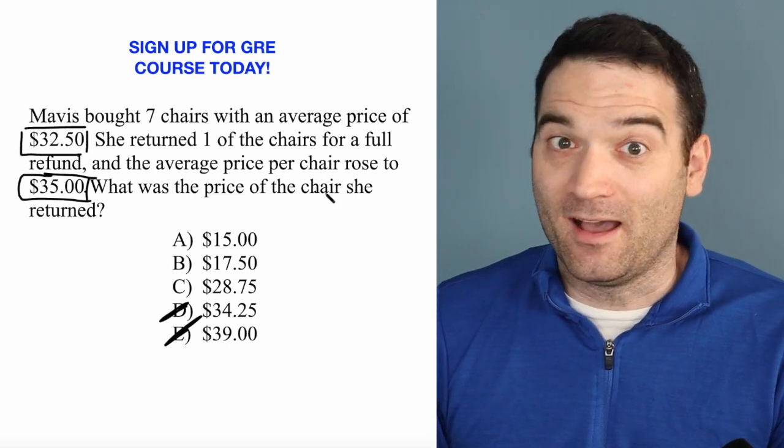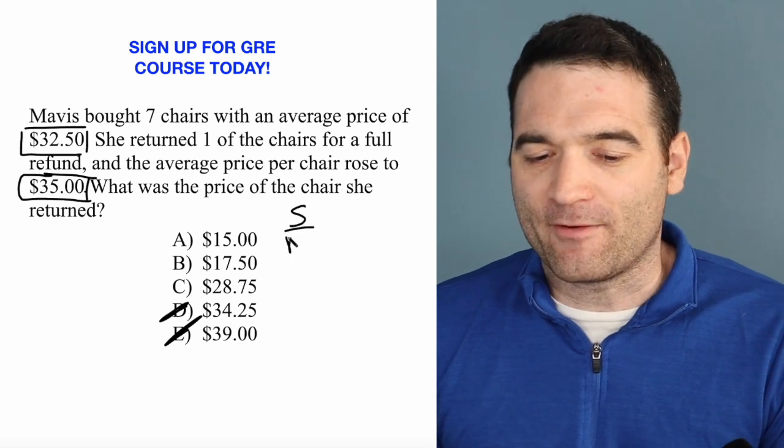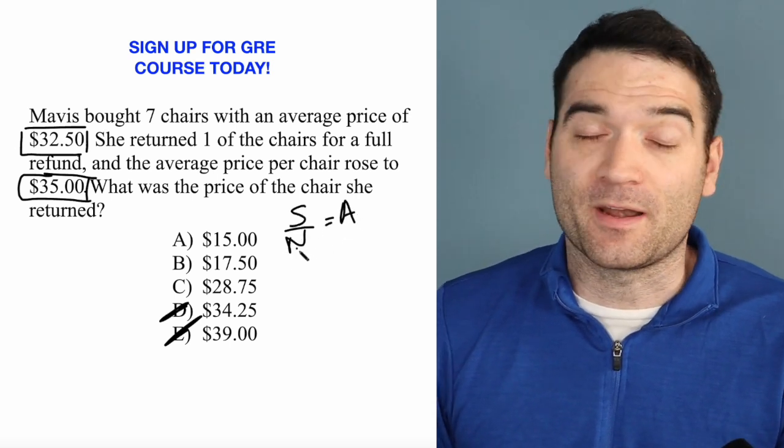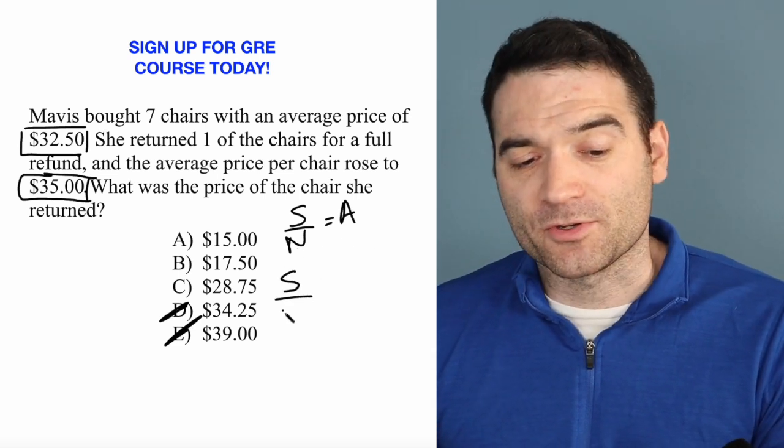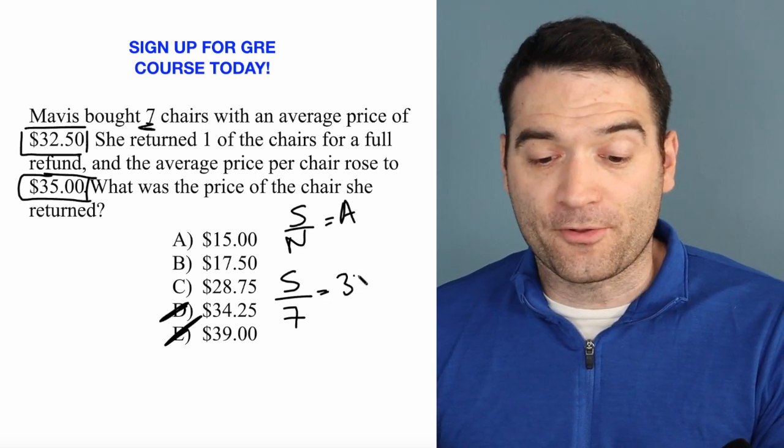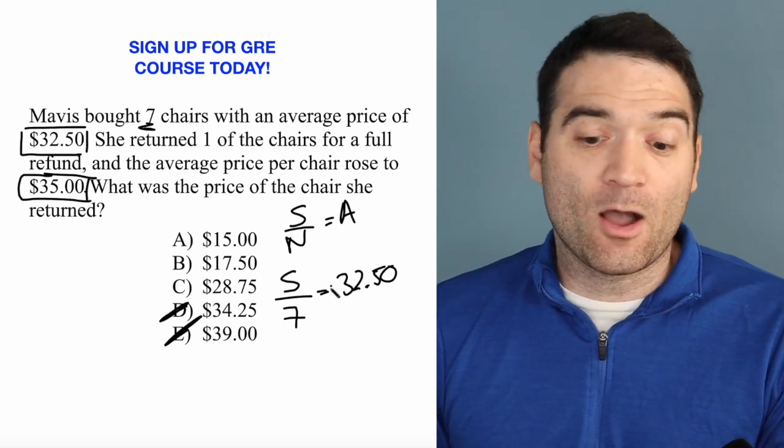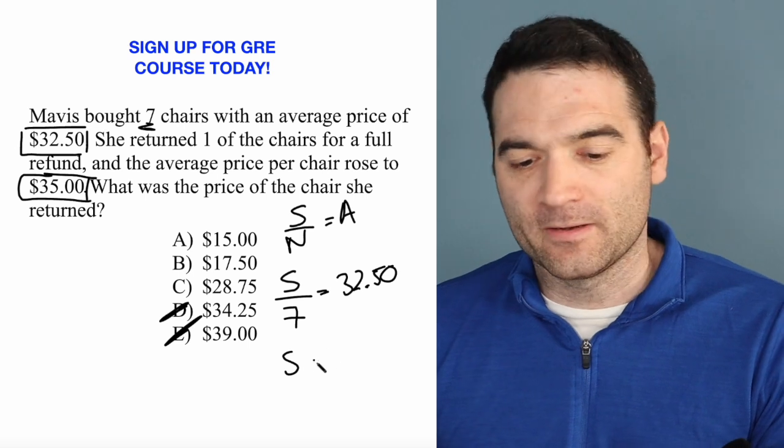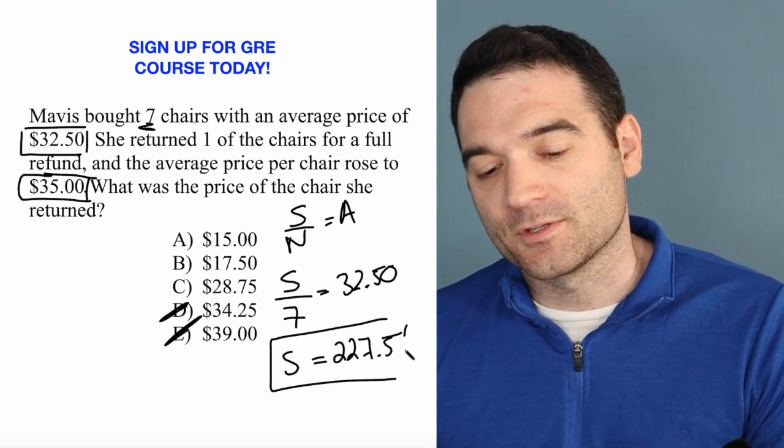Let's get into the arithmetic of it though. So whenever we're dealing with averages, we want to write out the average formula, which is something I call SNAH. The sum of the numbers divided by the number of numbers is equal to the average. So the sum of the numbers divided by 7, because there are 7 chairs, equals $32.50. Well, I can tell here how much I paid for all the chairs, the sum of the chairs. I'll multiply both sides by 7 with my calculator and get that sum equals 227.5.